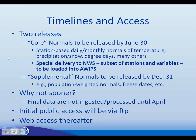The core normals include all station-based daily and monthly normals of temperature, precipitation, snow, degree days, and many other variables for thousands of stations. About 700 stations in total are going to be delivered to the National Weather Service. I'll basically send several files to Jim Z, conditioned based on WFO, and then those are going to be loaded into AWIPS.